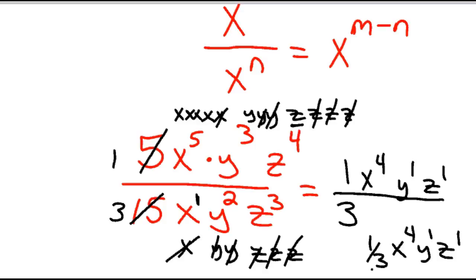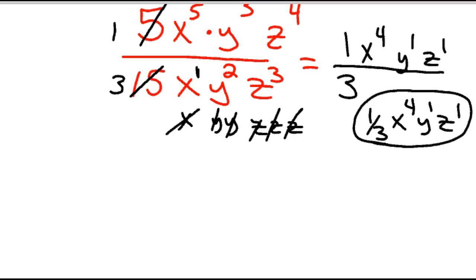So there you go — that's the second rule of exponents. Essentially, when you divide by the same base on your exponents, you subtract.